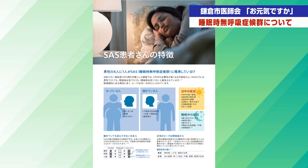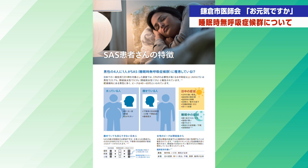では睡眠時無呼吸症候群について解説させていただきます。皆さんは睡眠時無呼吸症候群と聞くとどのようなイメージが思い浮かぶでしょうか。いびき、眠気、さまざまな症状があると思いますが、その通りです。睡眠時無呼吸症候群の怖いのはそこだけではありません。脳卒中、心不全、高血圧、心筋梗塞、糖尿病、交通事故の発生などのリスクとなると言われております。